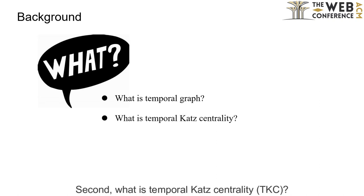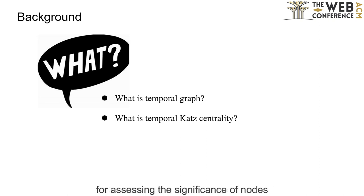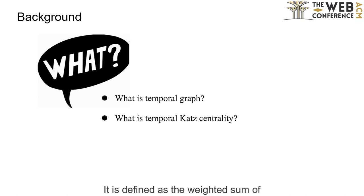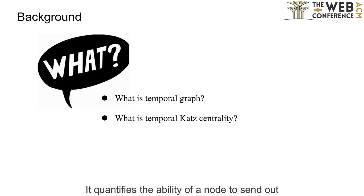Second, what is temporal Katz centrality, TKC? Temporal Katz centrality serves as a metric for assessing the significance of nodes within temporal graphs. It is defined as the weighted sum of temporal walks ending at a node, and it quantifies the ability of a node to send out or receive information along the links.